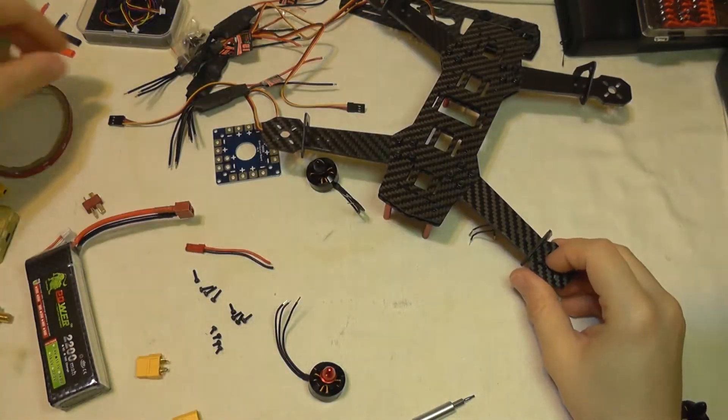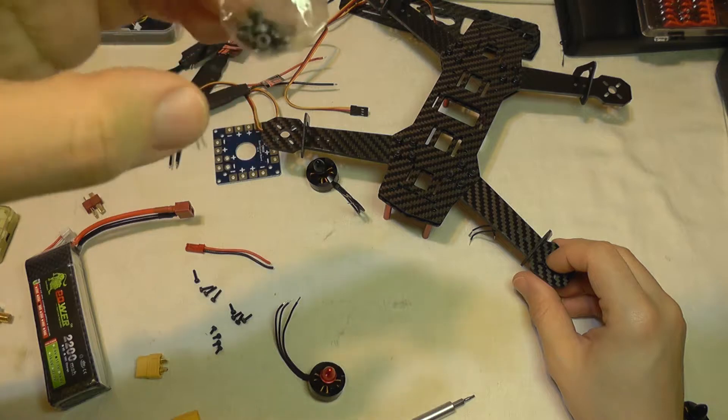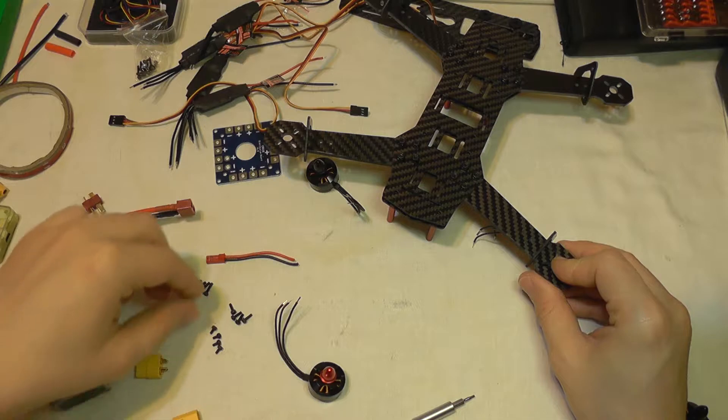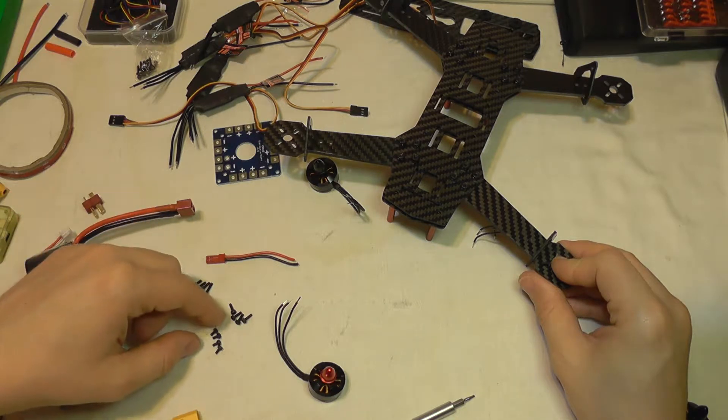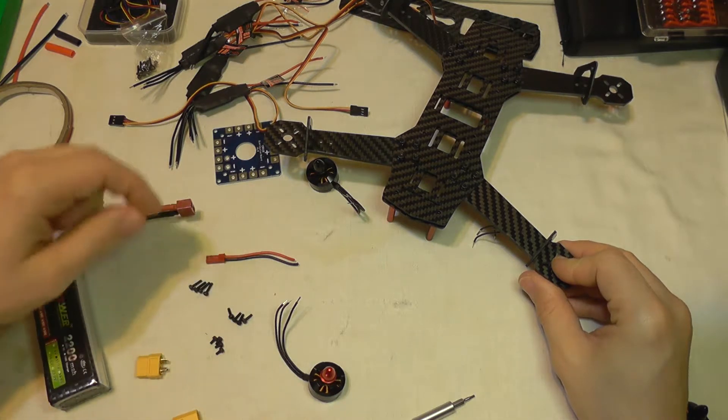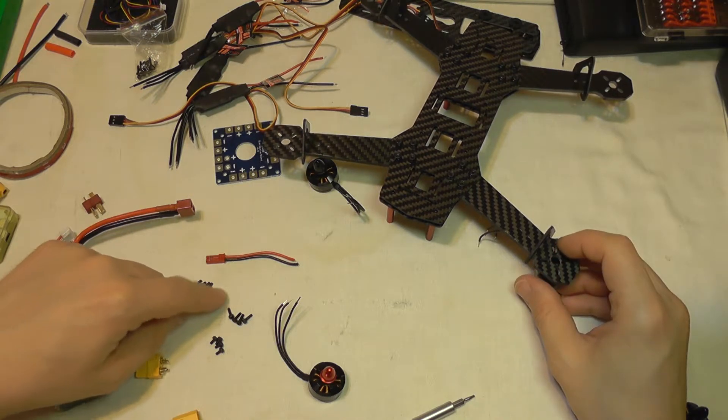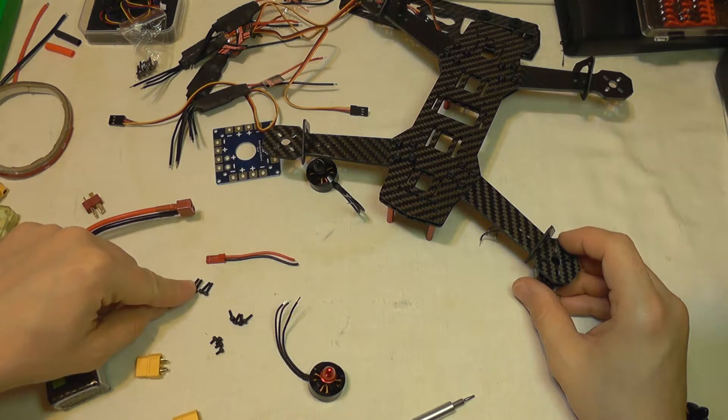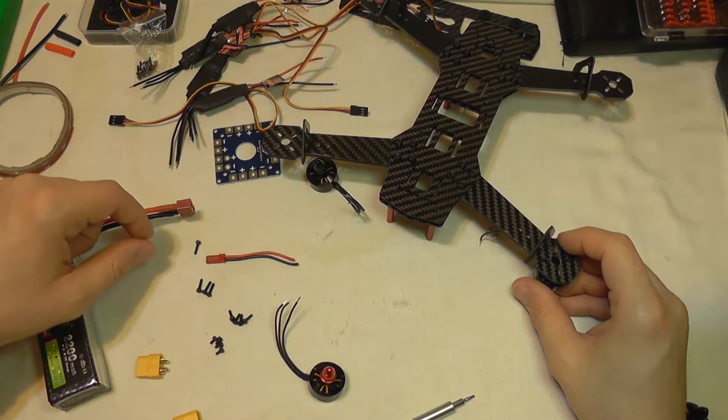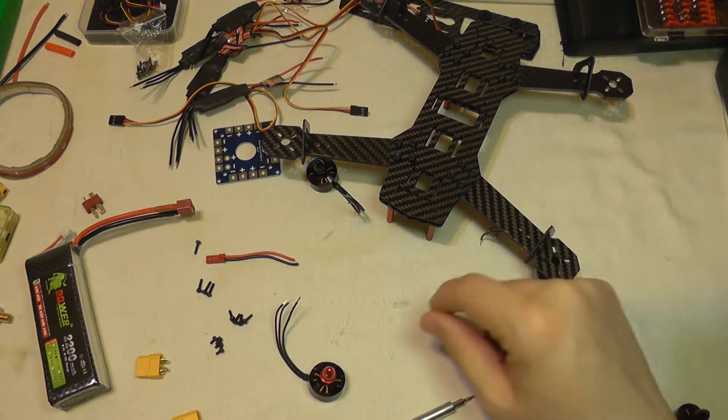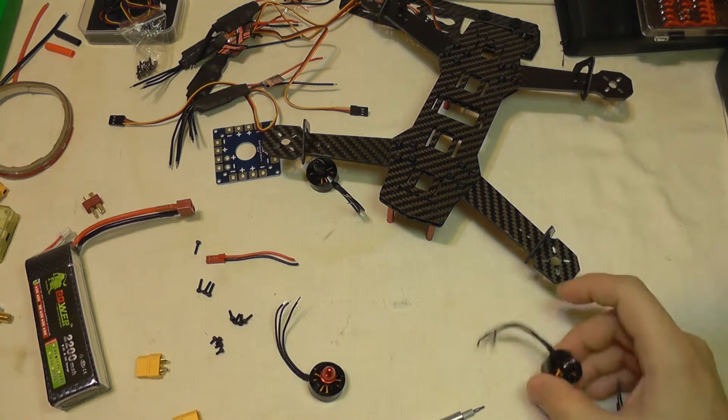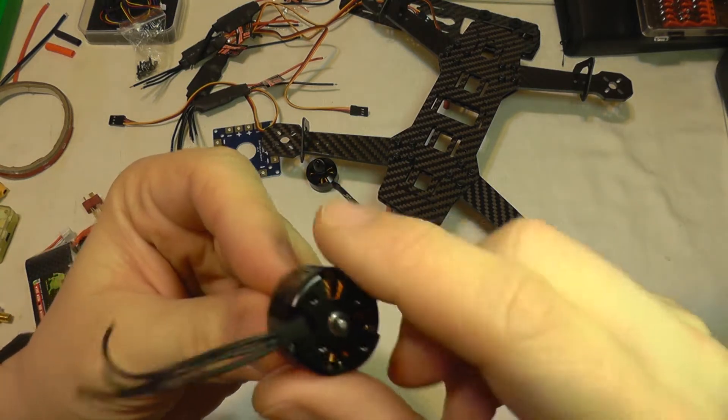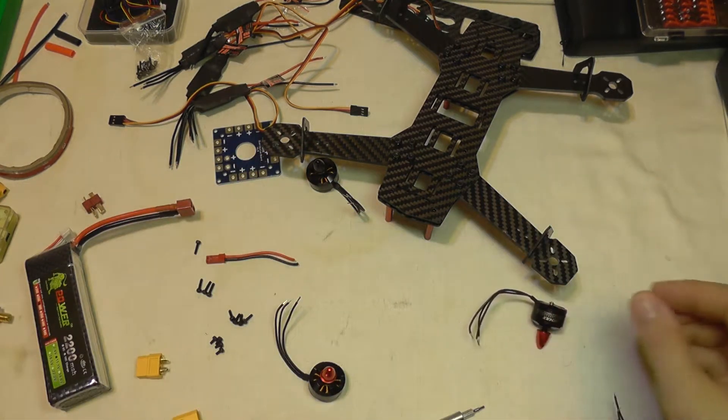Each motor comes with a bag like this with assorted screws. There are four screws that are long, four short screws, and four medium screws. In my case the medium screws are the best. If you use the long screws, there's the possibility that the screw will go through the arm and enter the motor and hit the wiring inside, possibly damaging it.